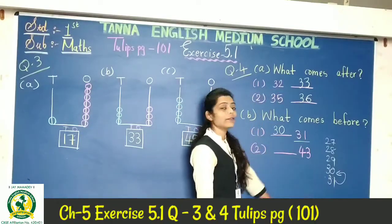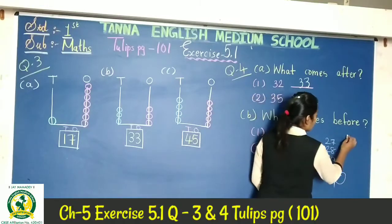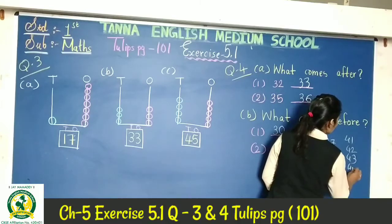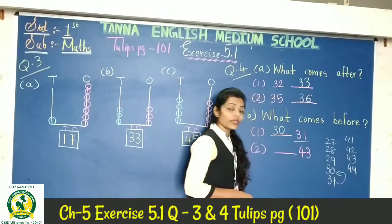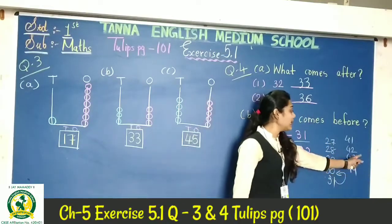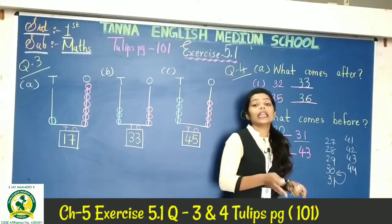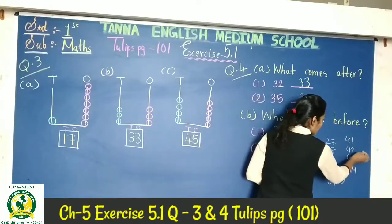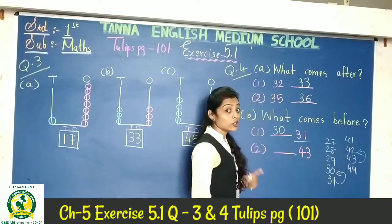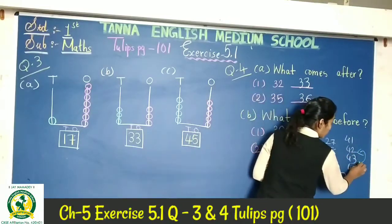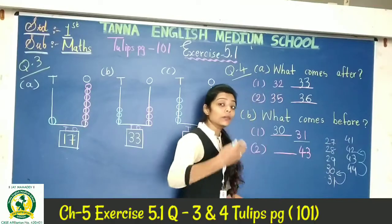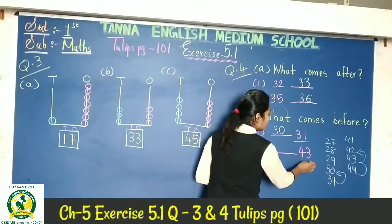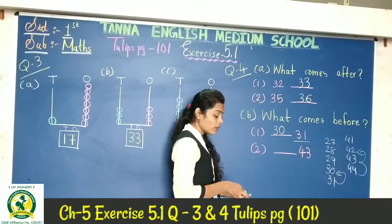Same here — for 43: 41, 42, 43, 44. When we say before, it means the number that comes before 43, which is 42. And the after of 43 would be 44. So the before number of 43 is 42.